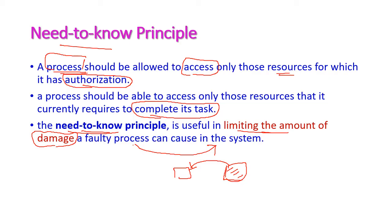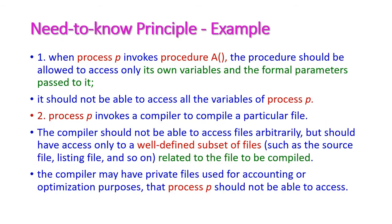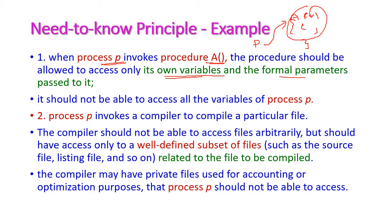If there is any fault, only that particular resource will get damaged and it will not affect all other resources. For example, if process B invokes a procedure A, the procedure should allow only its own variables — the formal parameters and local variables declared inside the procedure. The process should be allowed to access only these variables.